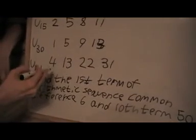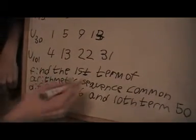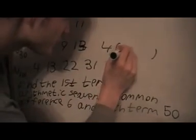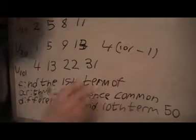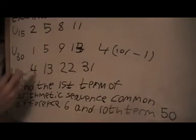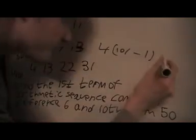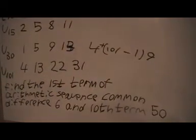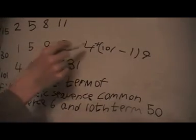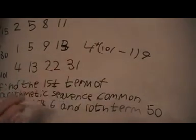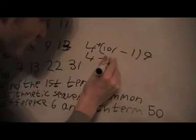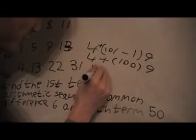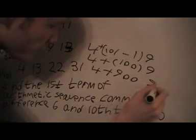Okay, so this one I want to find the 101st term. The first number is 4, so it's 4. I want to find 101 so I'll put 101 in here and take one away from that, and the difference here is 9. That should be plus in there. So that's 4 + 100 × 9 which would be 4 + 900 = 904.